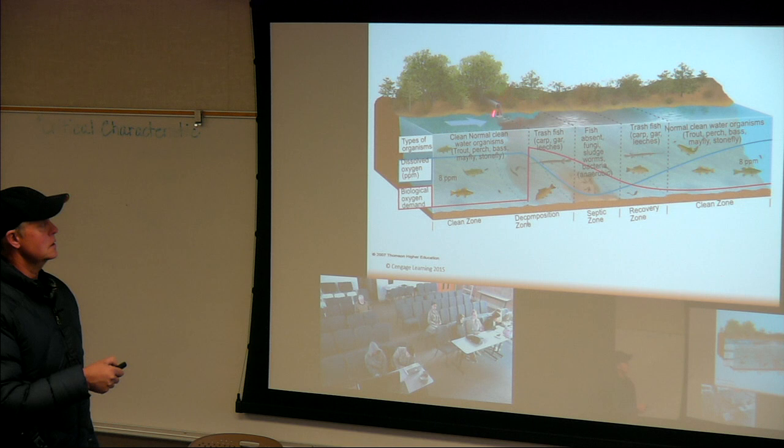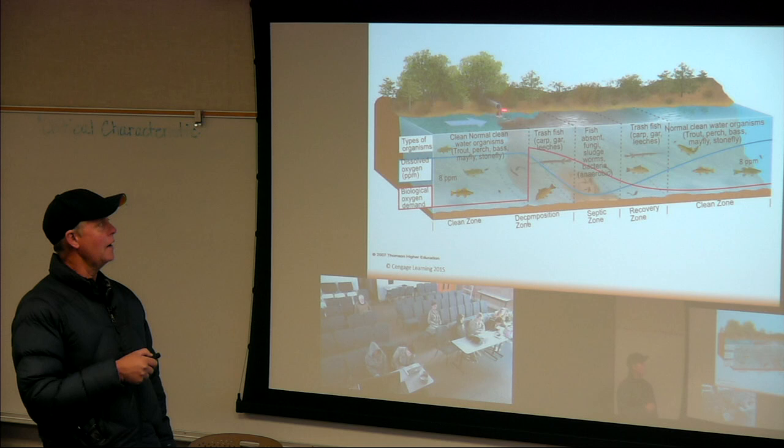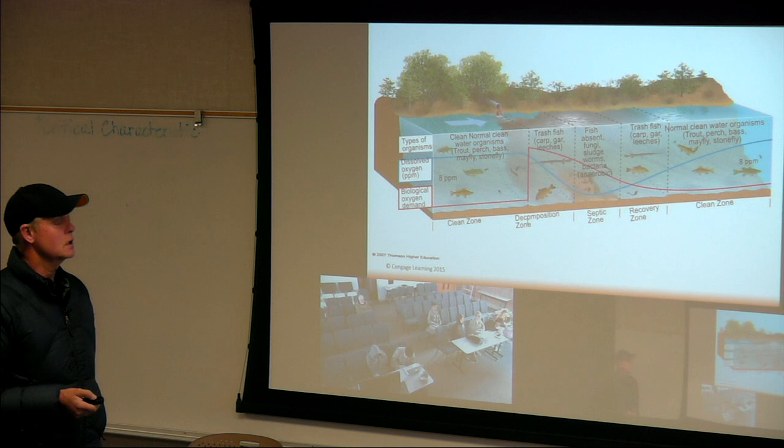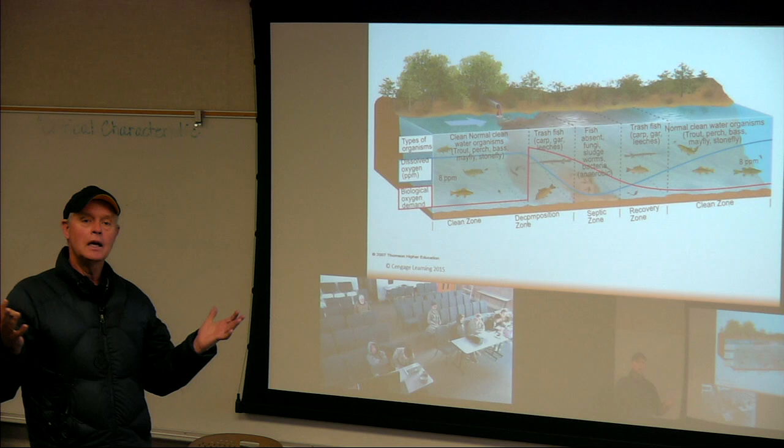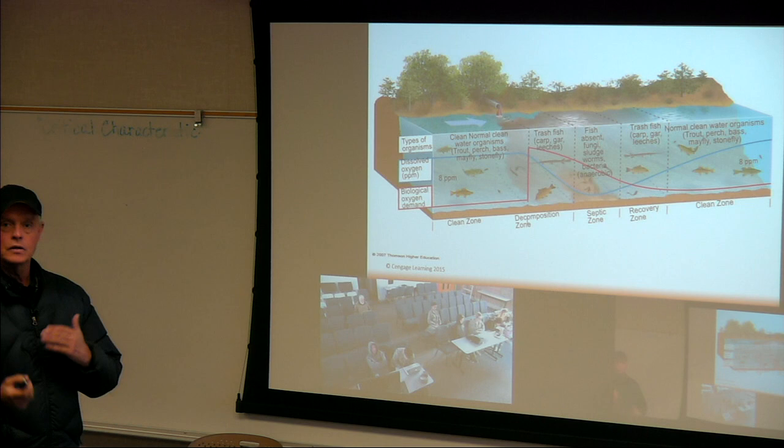Sewage is a good food source for all living things, and yes, it's being treated, but we have to make sure we don't dump it directly into a water source. We treat it first in a controlled system where we manage how much oxygen is applied. When we go to the Victor Valley Wastewater Treatment Plant, you'll see they spend a lot of money and energy putting air into the water to keep it oxygenated so all those bugs can live.